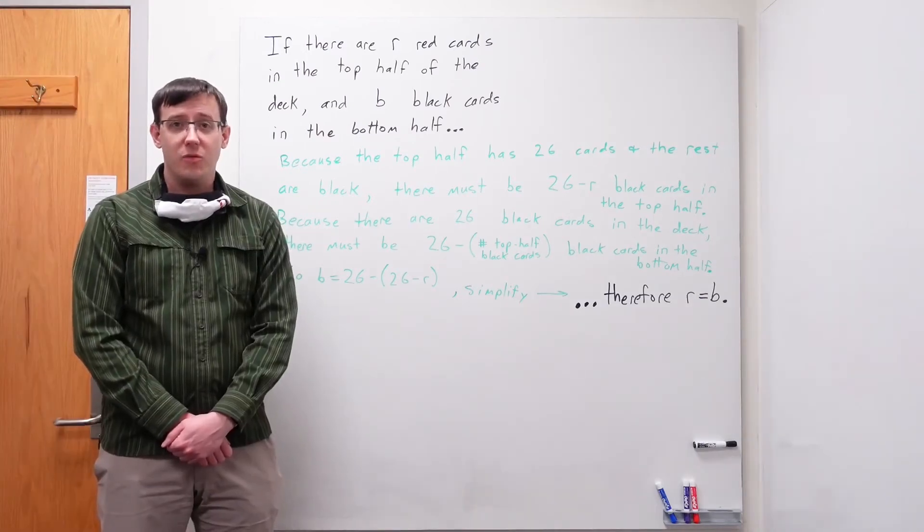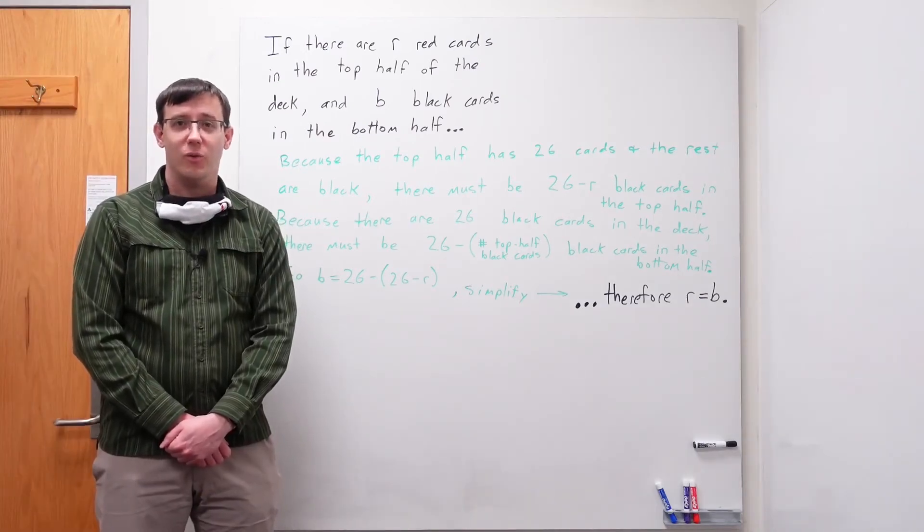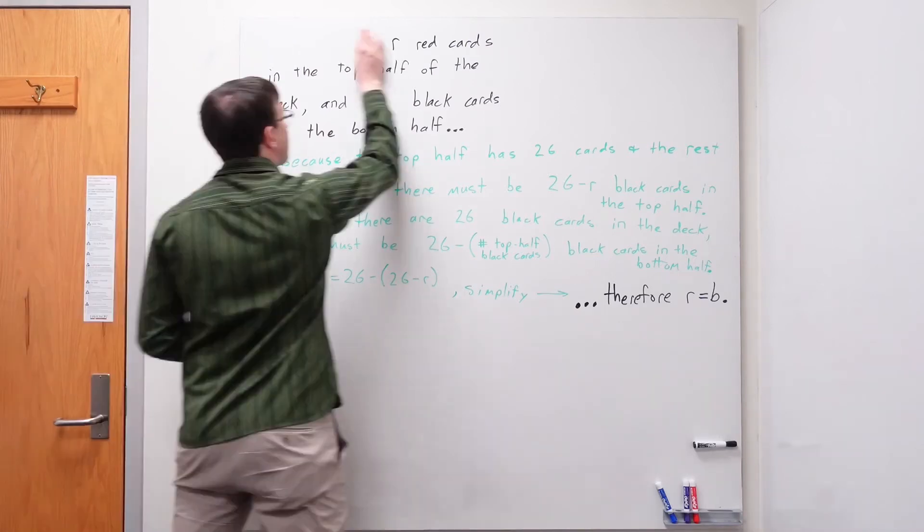And so now we have a mathematical proof that the card trick will work every time. So what did we get from this example? Well, first of all, it demonstrated the process of how progress happens in math.